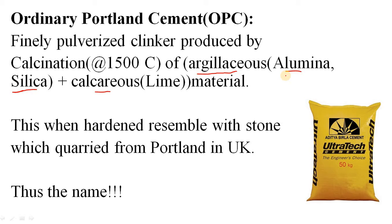Take some argillaceous material, for example clay, and some calcareous material, for example lime. Calcareous materials contain calcium oxide, and lime is its source. Mix clay (which contains silica and alumina) with lime (which contains calcium oxide) in a certain proportion, then burn the mixture at approximately 1400 to 1500 degrees Centigrade in a kiln. At this temperature, the calcination process occurs due to fusion, and after calcination, a boulder-type material called clinker is formed.